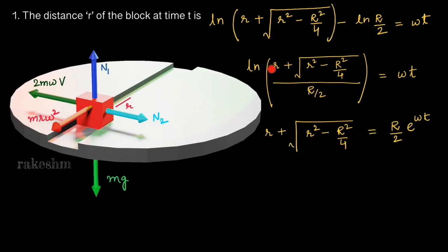Writing this as an exponential, the whole expression equals e^(ωt). So (r + √(r² - R²/4)) divided by (R/2) equals e^(ωt). Taking R/2 to the other side, we get r + √(r² - R²/4) = (R/2)·e^(ωt).